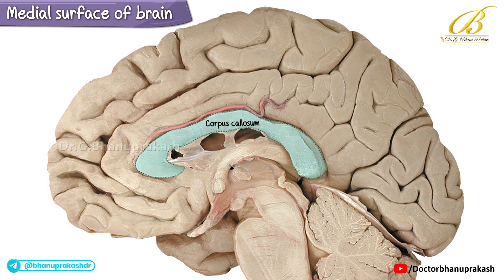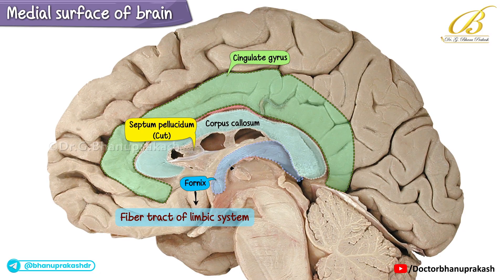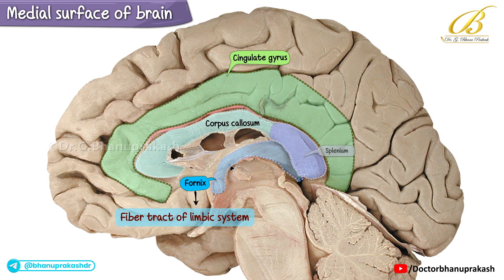Above the corpus callosum, we find the cingulate gyrus, a vital component of the limbic system. The fornix, another fiber tract of the limbic system, is located along the lower edge of the septum. The fornix, a C-shaped bundle of white matter, resides in the medial aspect of the cerebral hemispheres, arching beneath the corpus callosum along its inferior border and then curving upwards beneath the splenium.